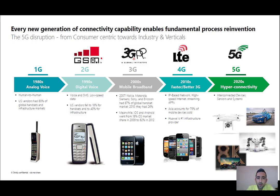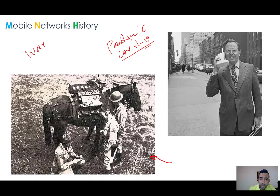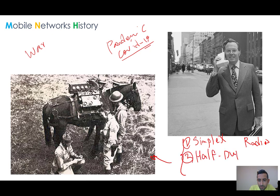To summarize the history: in the 1980s we had the first generation of mobile networks. The motivation was military applications, and it was used for human-to-human communication. In all my classes I explain that there are three modes of communication: simplex — one-way communication like radio; half duplex — where at any one time you are either a sender or a receiver; and full duplex.